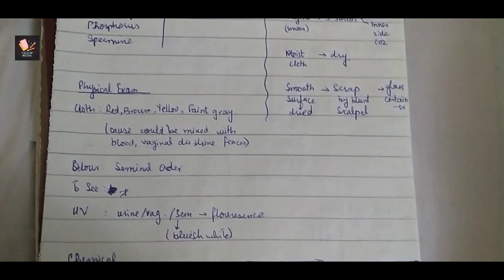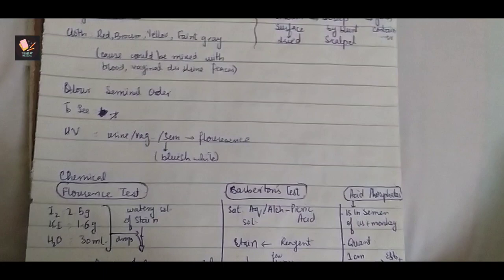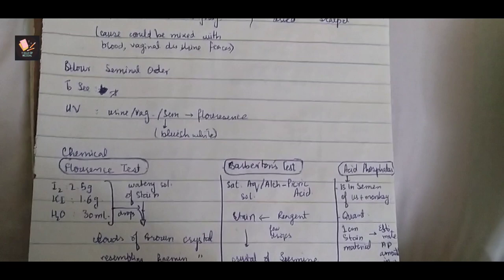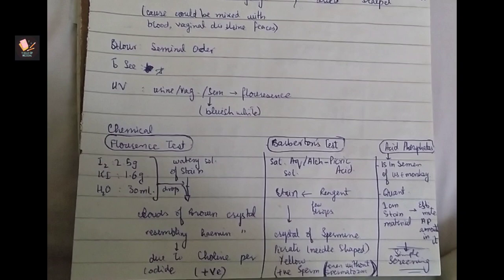In one instant we can determine different things. Like UV rays give different light. Vaginal secretion and urine will produce different fluorescence. After chemical tests, we have 3 chemical tests we have to do: Florence, Barberion acid phosphatase.